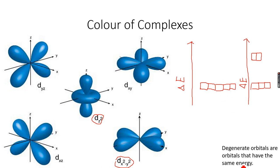Degenerate orbitals are orbitals that have the same energy, so they're all at the same energy level. But when they split into two energy levels, they are no longer degenerate because these have a different energy to these, so they become non-degenerate orbitals.